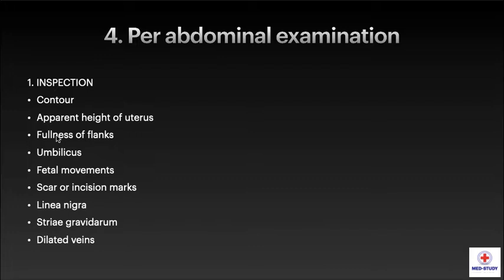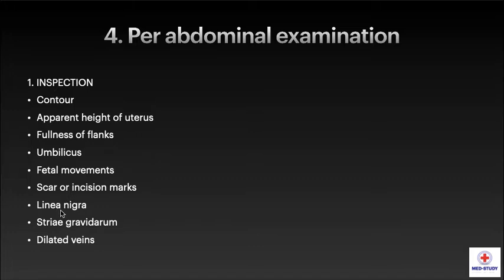Per abdominal examination should be done under the following headings. For inspection, we have to look for the contour of the abdomen, apparent height of the uterus, fullness of flanks, condition of the umbilicus — whether it is inverted or everted — fetal movements, any scar or previous incision marks, linea nigra, striae gravidarum, and dilated veins.